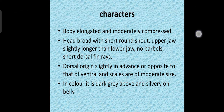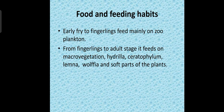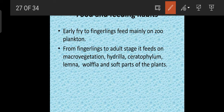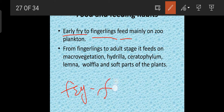Now, food and feeding habits of Cirrhinus mrigala: early fry to fingerling feeds mainly on zooplankton. When it is very minute — from fry to fingerling, meaning after hatching until the fish reaches finger size — it feeds on zooplankton, so it is totally carnivorous at that stage.